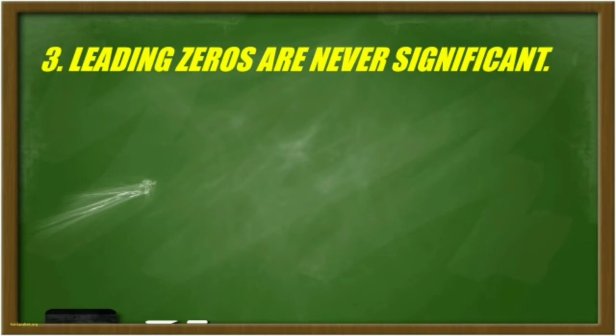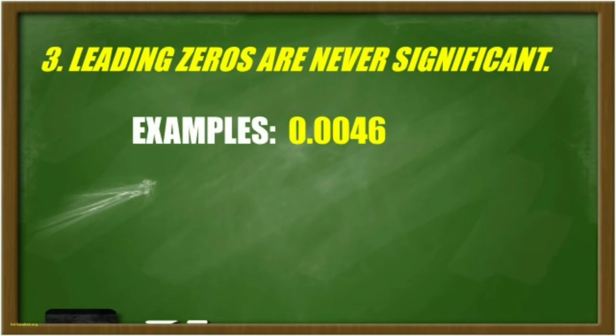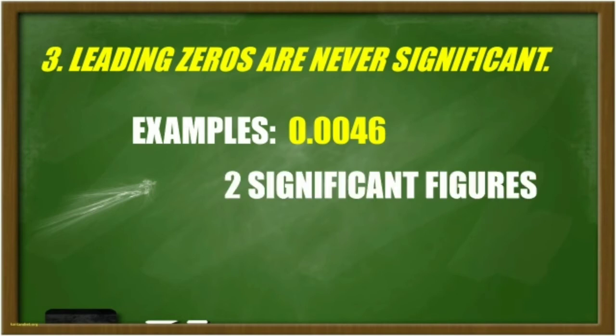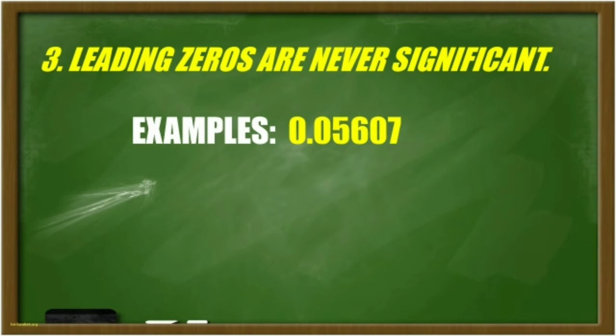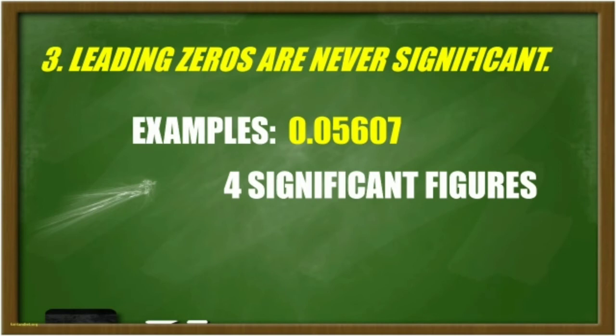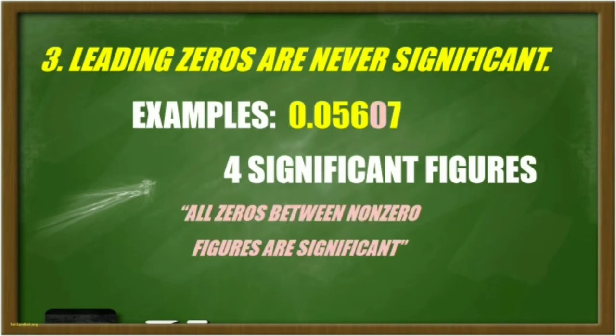In rule number 3, leading zeros are never significant. Leading zeros are zeros written before the non-zero digits. For example, in 0.0046, there are only 2 significant figures: 4 and 6, since the 3 zeros are leading or written before digit 4. Another example: in 0.05607, there are 4 significant figures. The 2 leading zeros are not counted, but the 0 between 6 and 7 is significant. Remember, in rule number 2, all zeros between non-zeros are significant.